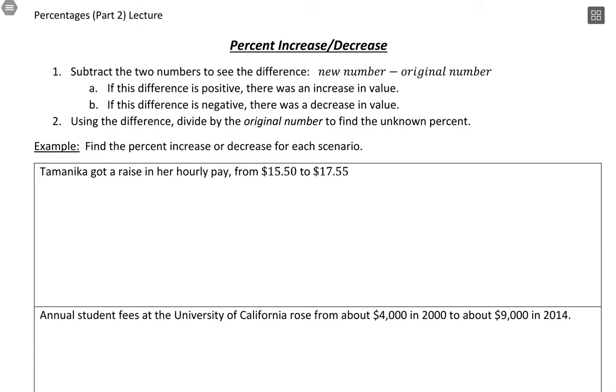Then to get the percent increase or decrease, what we're going to do is divide by the original number. If you're looking directly for percent increase or decrease, then what you're going to do is take that new number minus the old number divided by the old number.